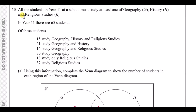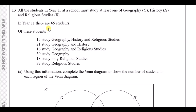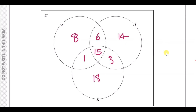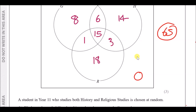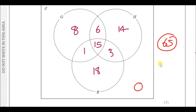The Venn diagram is almost complete — only the history-only segment and the outside region remain. Since all Year 11 students must study at least one subject, the outside must be zero. Adding up all known figures gives 51, so 65 minus 51 leaves 14 in the history-only region. All 65 students are now accounted for, so the outside is 0 — never leave that blank or you'll lose a mark.